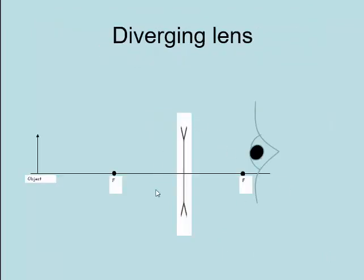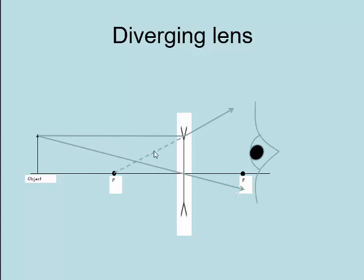Now for a diverging lens. This is how a diverging lens is drawn. The object is here, the focal point is here. A ray going parallel to the principal axis comes away as if it has come from the focal point. A ray through the centre continues straight. We trace back this virtual ray as if it came from the focal point, because it was parallel coming in. Where these virtual rays cross, we draw our image. The image is virtual, upright, and diminished.